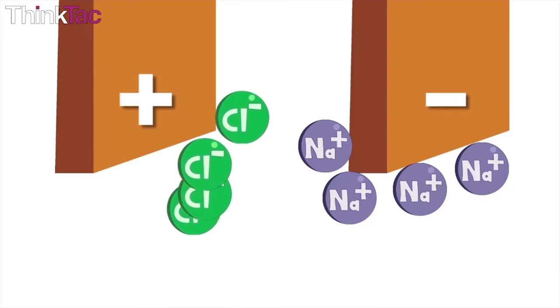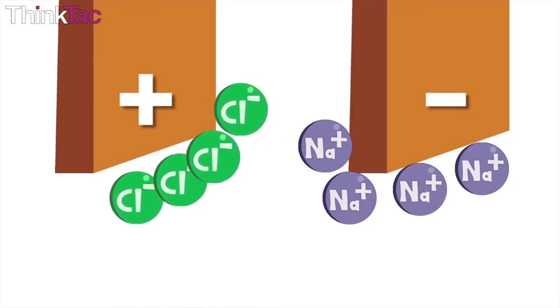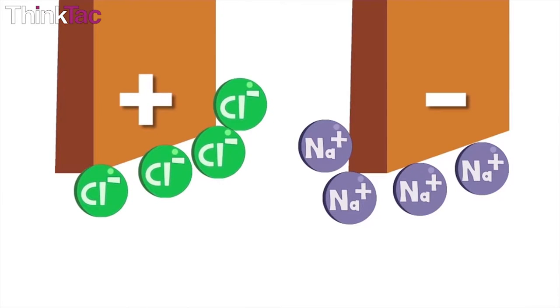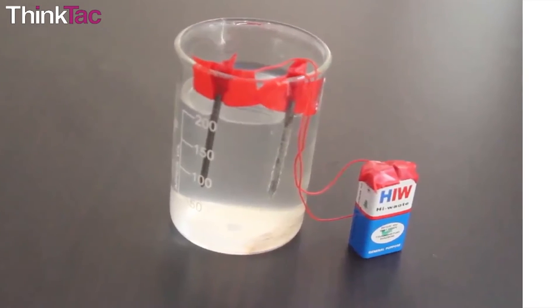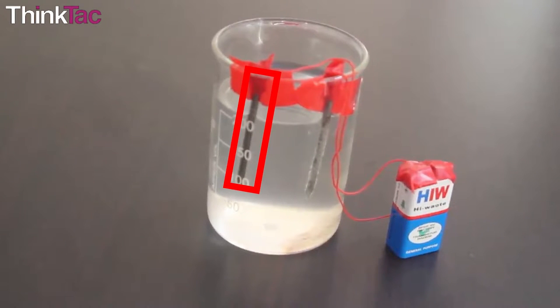Thus the chloride ions move towards the anode and the sodium ions move towards the cathode. One of the iron nails gets corroded or rusted and you see the difference in color due to the multiple